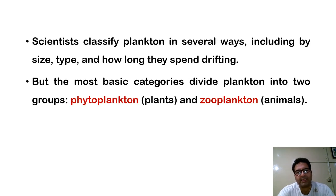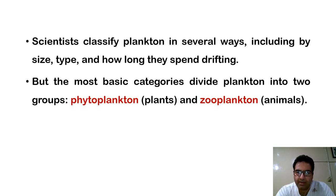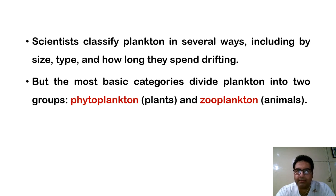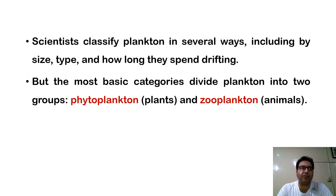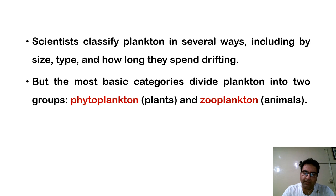The scientists classify plankton in several ways, based on the size, type, and how long they spend their time in drifting. Broadly speaking, we can categorize the plankton into two main types: that is phytoplankton, which is the plant source, and zooplankton, which belongs to the animal group.